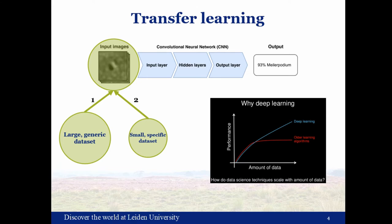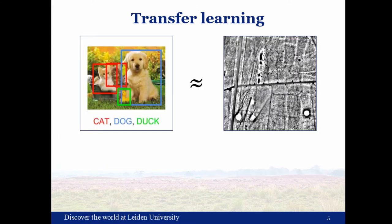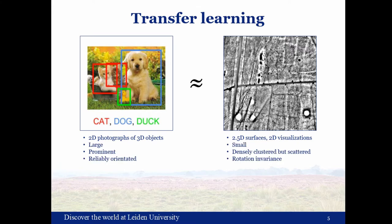Within deep learning, basically most of the time it is: the more data you have, the better. Also, the large generic dataset and the small specific dataset need to be somewhat comparable. We can wonder whether a picture of cats and dogs is comparable to LiDAR data. On one hand, we have 3D objects in 2D images versus 2.5D surfaces visualized with a whole array of 2D visualizations. We have large and prominent objects that are generally reliably orientated — most of the time the dog is not upside down — versus small and mostly densely clustered but very scattered objects, such as barrows in LiDAR images, that have almost complete rotation invariance.